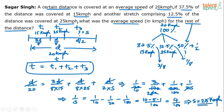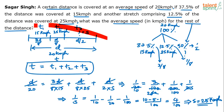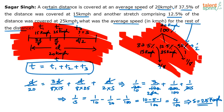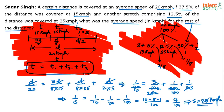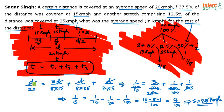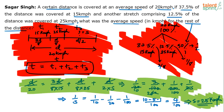Please do not go by the length of the explanation or the number of steps written on paper. All the diagram drawing and intermediate working is only for the sake of understanding — that's waste of time in an exam. Only the key equation needs to be written on paper; solve that and you get the answer. The answer to this question posted by Sagar Singh is 25 kilometers per hour — the average speed for the third stretch.